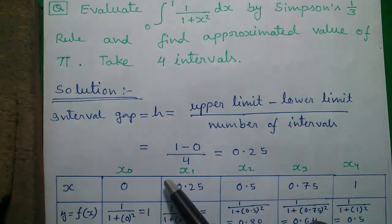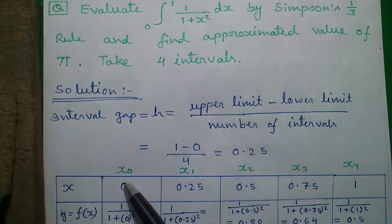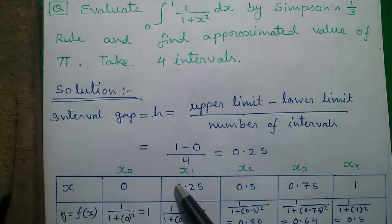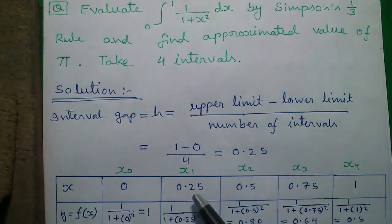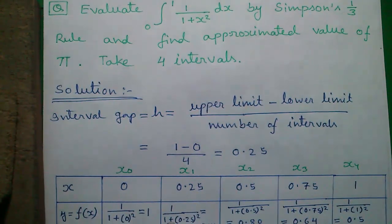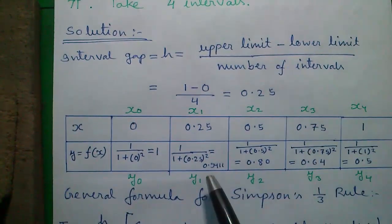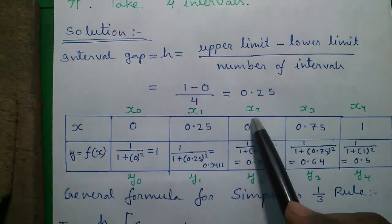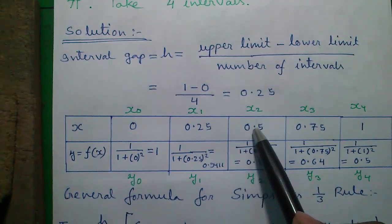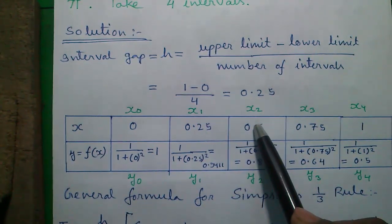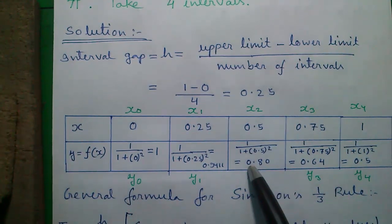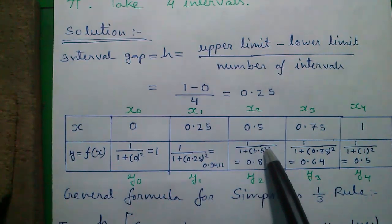Next, we will add h to x. So h is 0.25, so 0 plus 0.25 is 0.25 for x1. So y1 is 1 divided by 1 plus 0.25 whole square which is 0.9411. Next, 0.25 plus h is 0.5. So for x equals to 0.5, y becomes 1 divided by 1 plus 0.5 whole square which is 0.80.